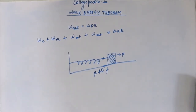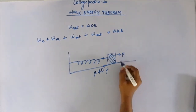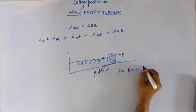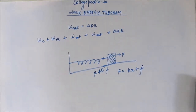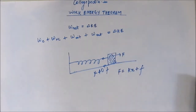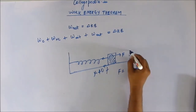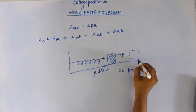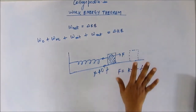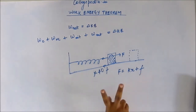If we move the block very slowly so that it does not gain any kinetic energy, then at any point in time the external force must equal the spring force kx plus the frictional force. Suppose we very slowly bring the block to a new position — in that case, no kinetic energy is gained by the block.